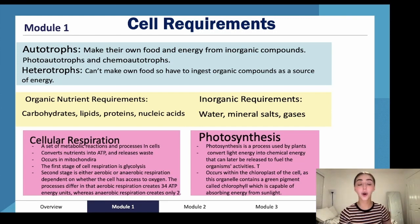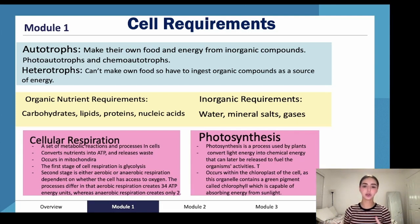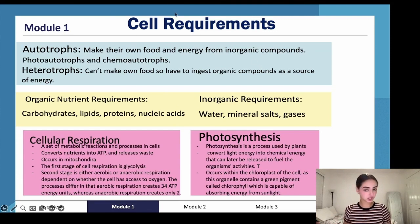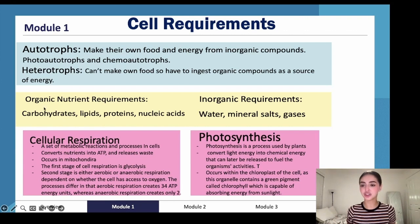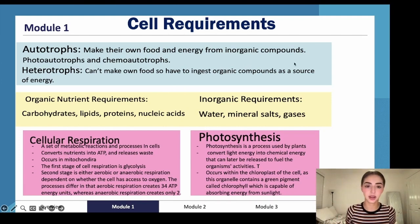Autotrophs are also known as primary producers. Heterotrophs cannot make their own food, so they have to ingest organic compounds as a source of energy. If you're a heterotroph and need to ingest organic nutrients, you require carbohydrates, lipids, proteins, and nucleic acids. For inorganic compounds, you require water, minerals, salts, and gases.